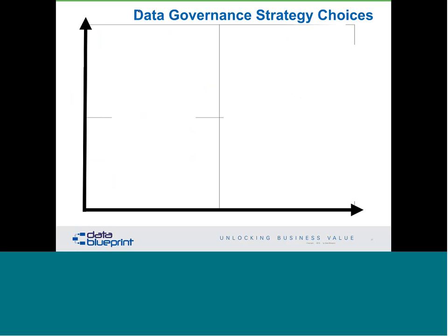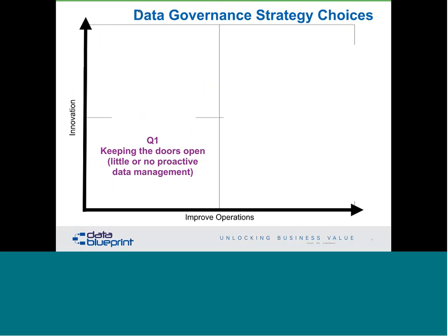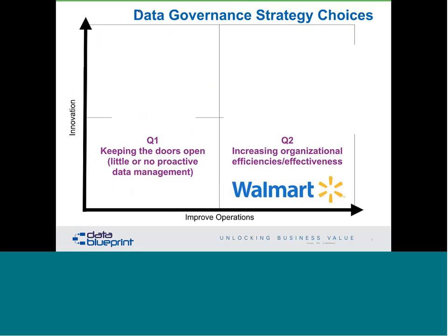Let's look at some hard choices, largely derived from Michael Porter. Many organizations fall into the first quadrant, not doing anything too innovative with data governance. Some organizations focus on efficiency and effectiveness — Walmart comes to mind, with their strategy of everyday low cost, which translates to the customer as everyday low price. A very simple, very clear example of organizational effectiveness and efficiency as a culture.